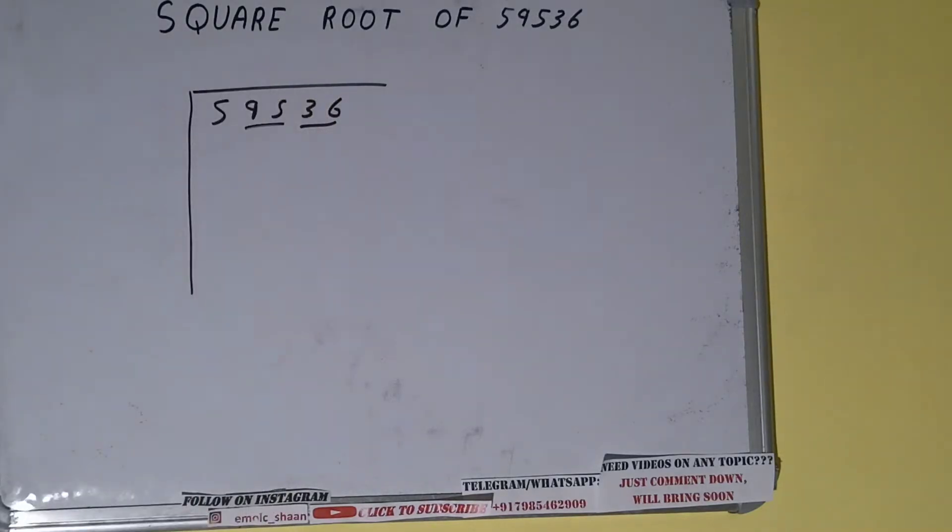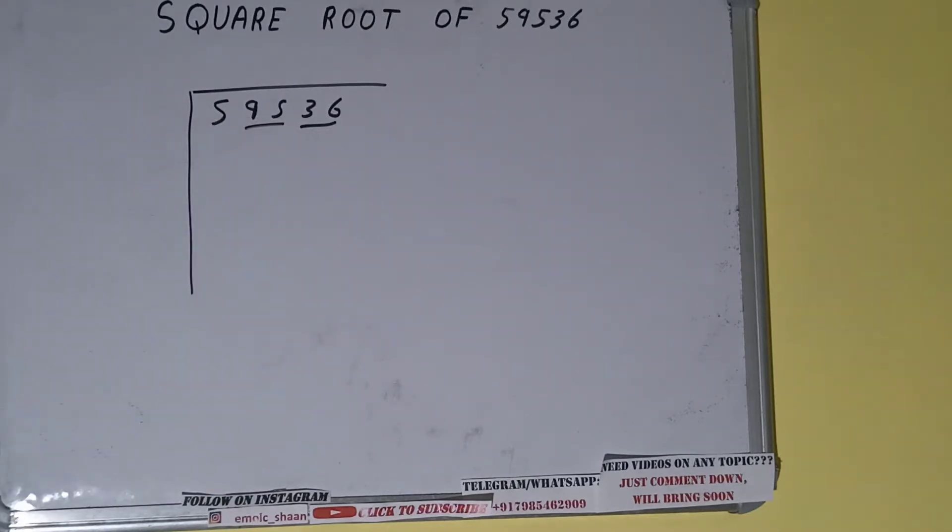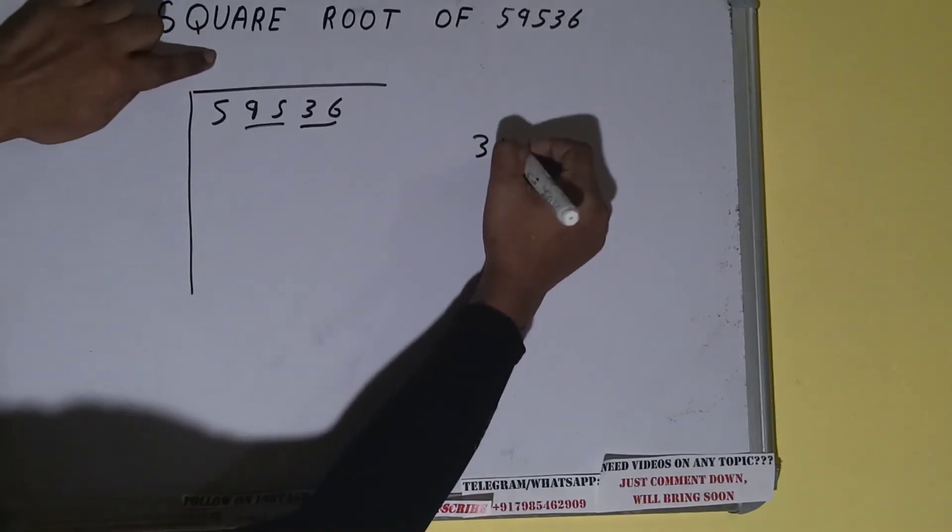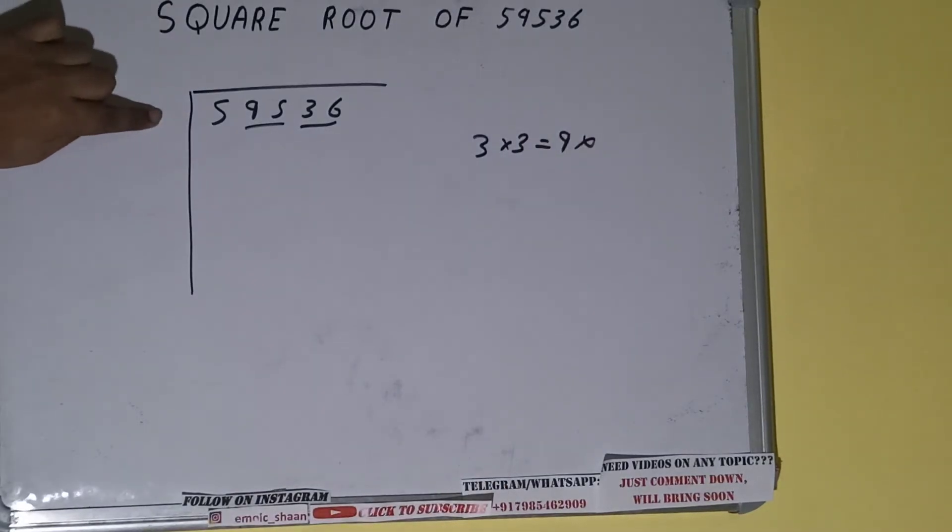First we'll divide this five, and then we'll bring down the pairs. The rule is whatever number we write here, we have to write here also. So if we write 3 here and 3 here, we'll be getting 9, which is greater than 5, so we cannot use it.